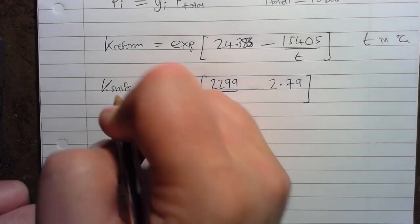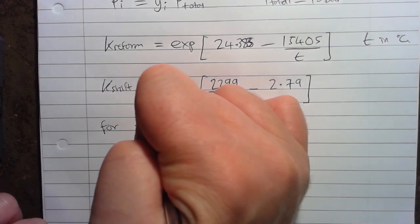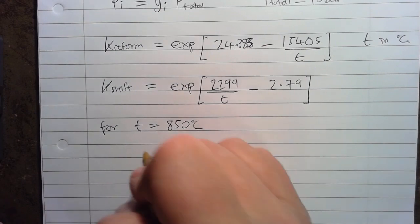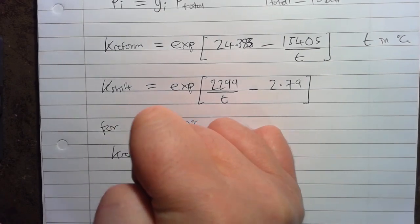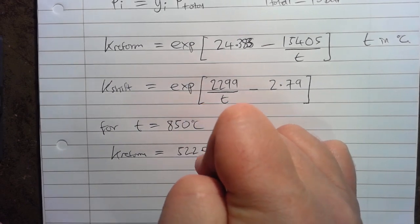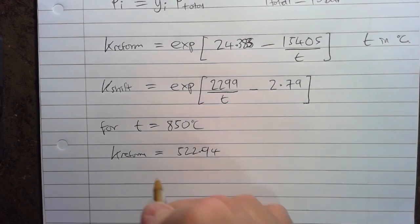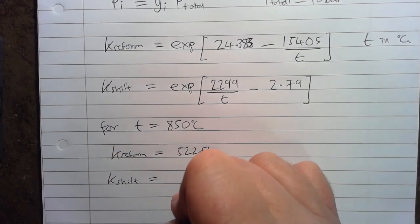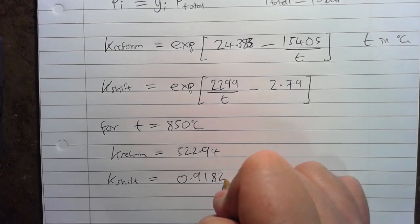Now for T equals 850 degrees C you should get K reform to equal 522.94 and you should get K shift to equal 0.9182.